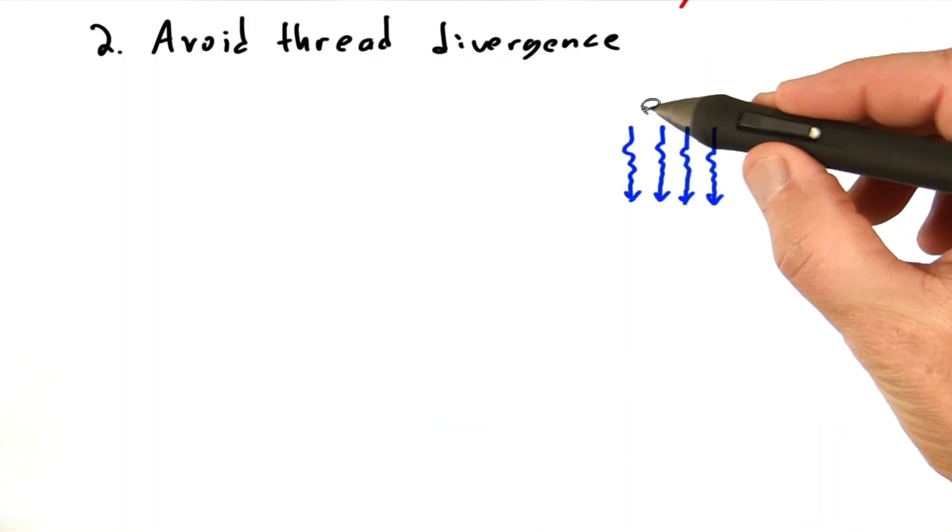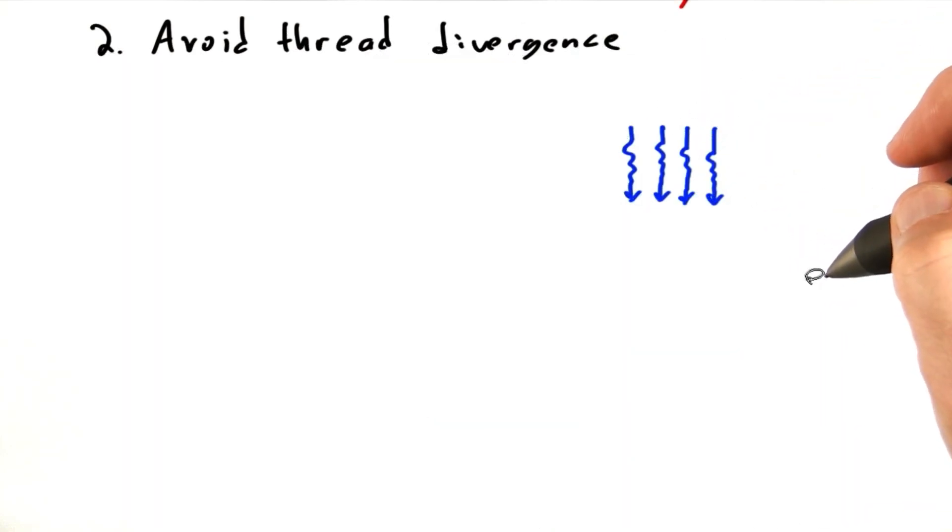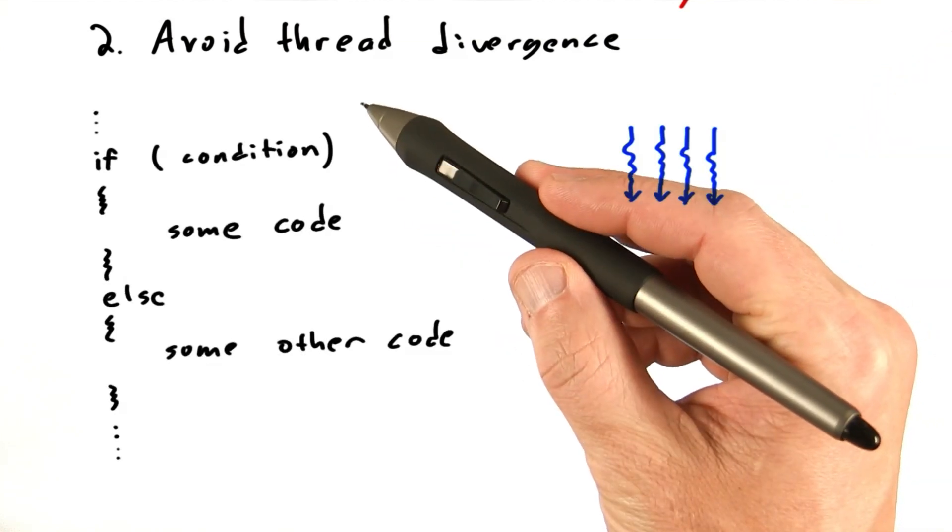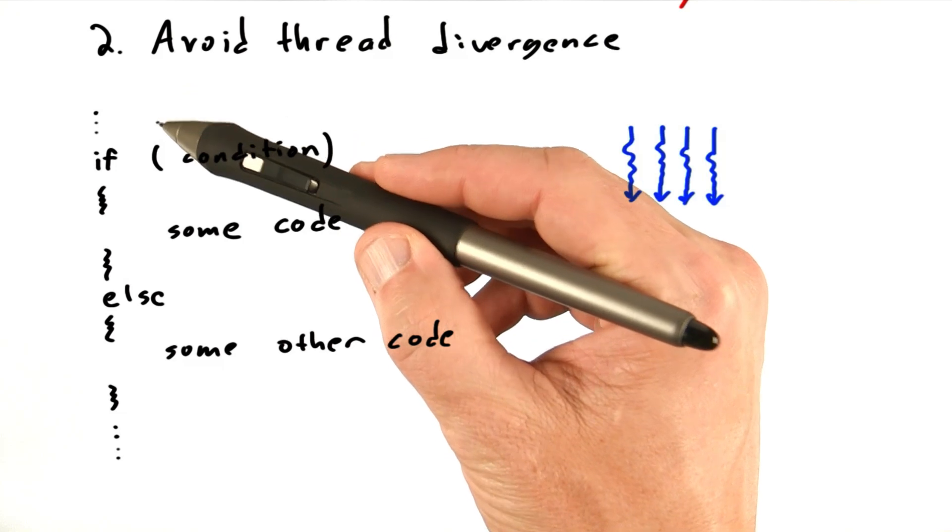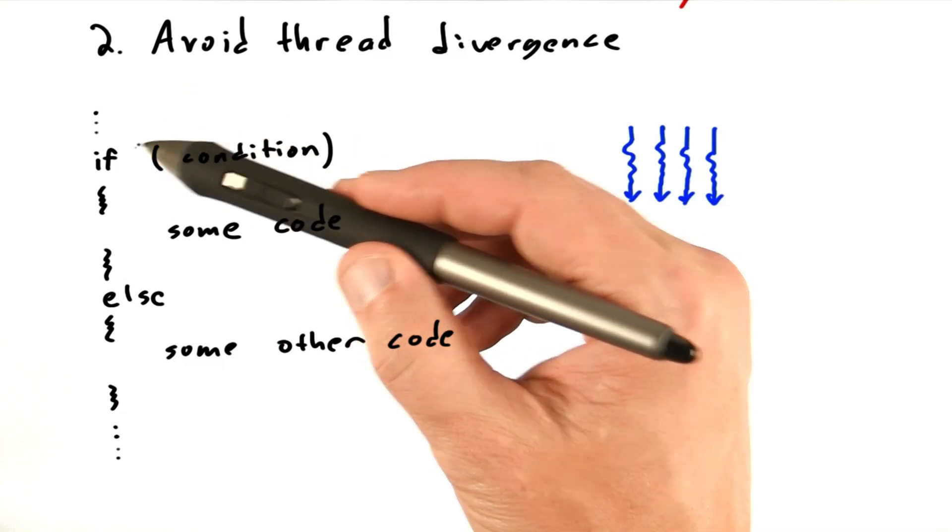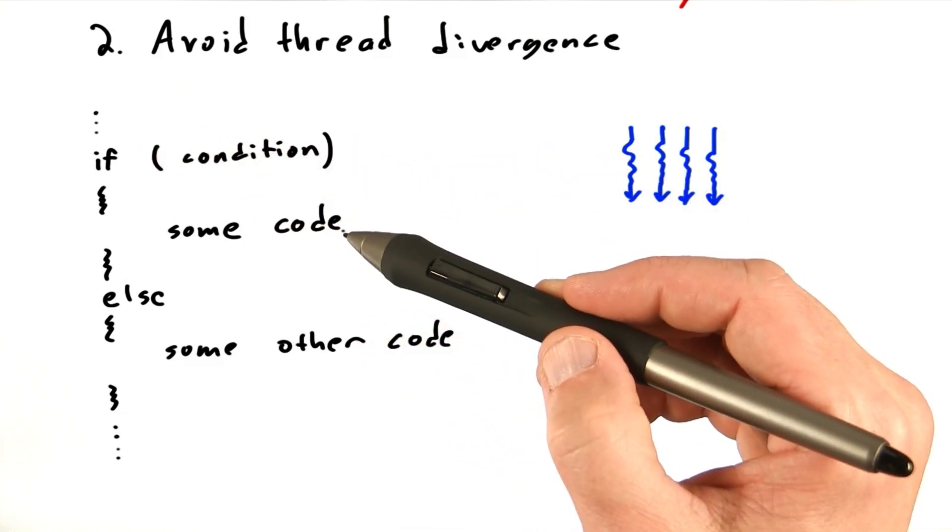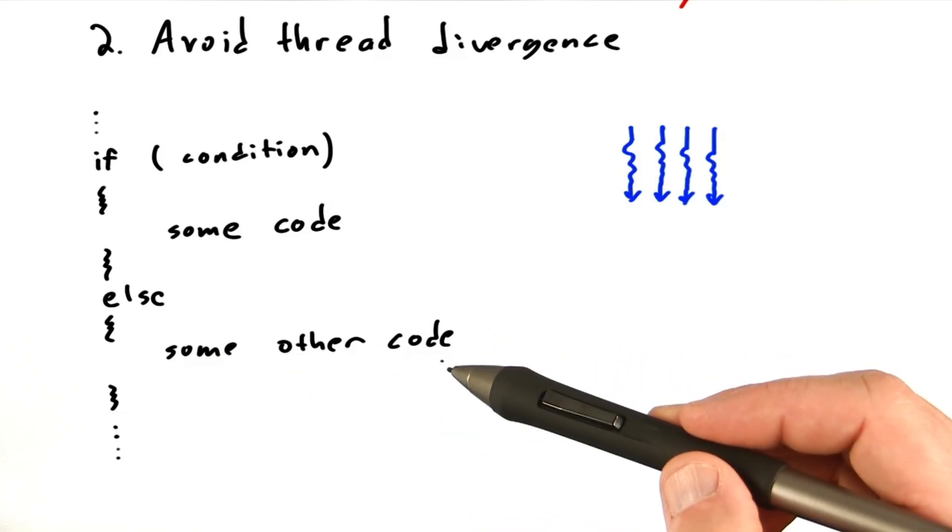When parallel threads, like threads in our trusty thread block, do something different, we say they diverge. So if we had some code that looked like this in a kernel, you're doing some stuff and you reach an if statement, and you say if condition is true, then execute some code, else execute some other code, and you proceed.